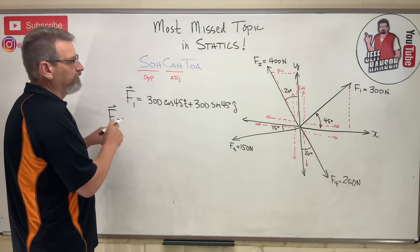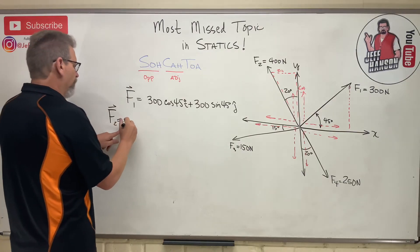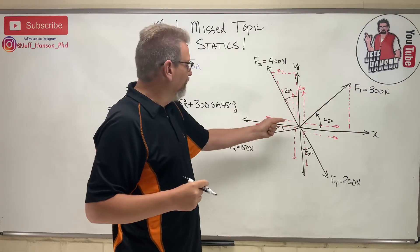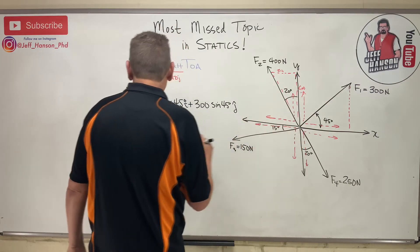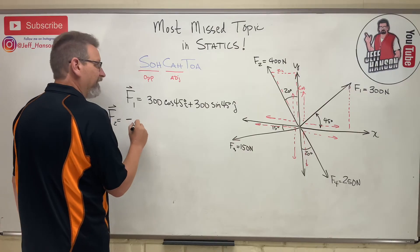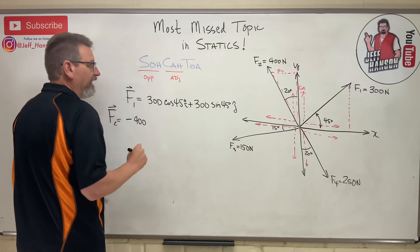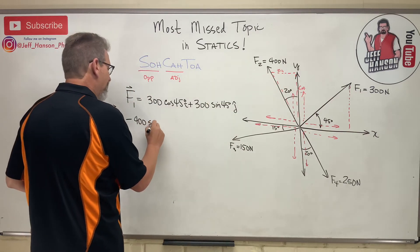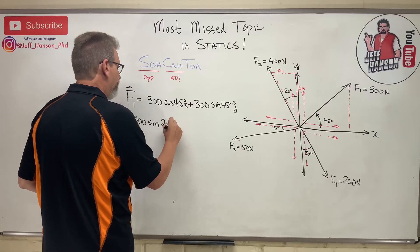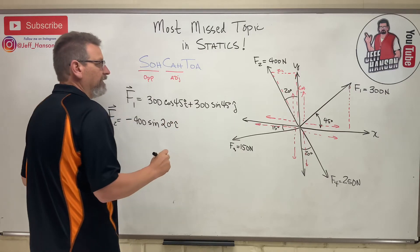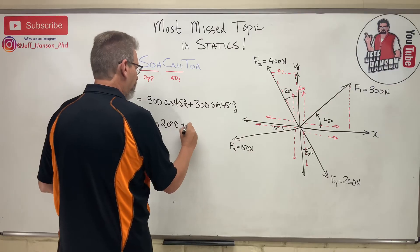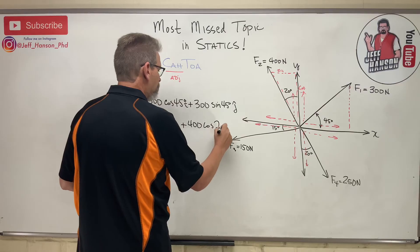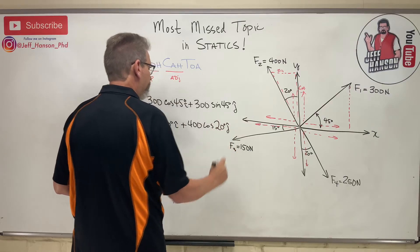All right, so vector F2 is going to be - this is 400. So what do we have here? The y component is uphill, but the x component is in the negative direction. So here we go, negative. Here's the x first: 400, and the x component was what? Oh, it was sine, wasn't it? 400 sine 20 i hat. And then the y component is uphill, that's positive, so plus 400 cosine 20 j hat. So there's that one.